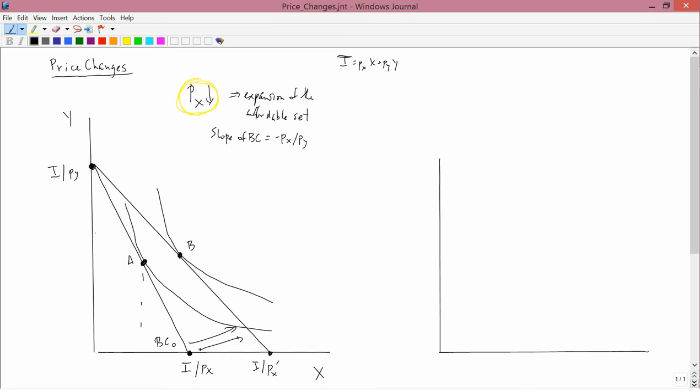You can see that consumption of X used to be there, and consumption of X is now here. Consumption of Y has also changed. So, the change in the price of X doesn't only affect the quantity demanded of X, it can also affect the quantity demanded of Y. In fact, it does affect the quantity demanded of Y.